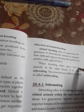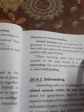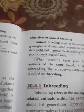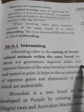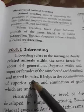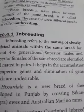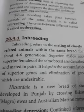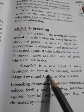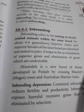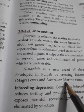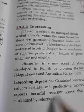Inbreeding refers to the mating of closely related animals within the same breed for about four to six generations. Superior males and females of the same breed are identified and mated in pairs, then allowed to fertilize each other. It helps in the accumulation of superior genes and the elimination of undesirable genes. For example, Hissadal is a new breed of sheep developed in Punjab by crossing between Bikaneri Kalmagra ewes and Australian Merino rams.